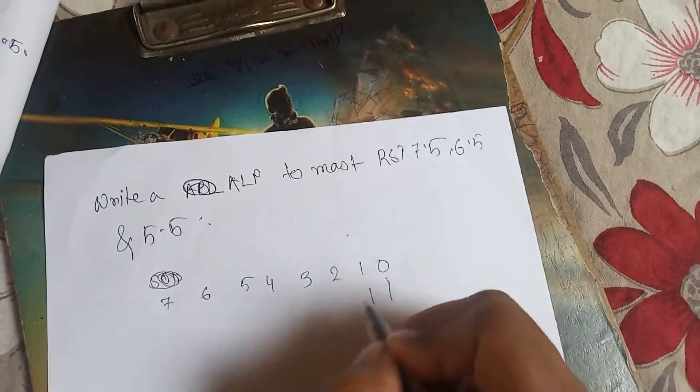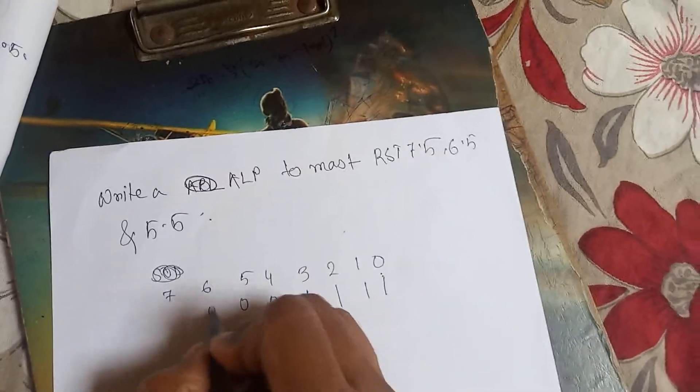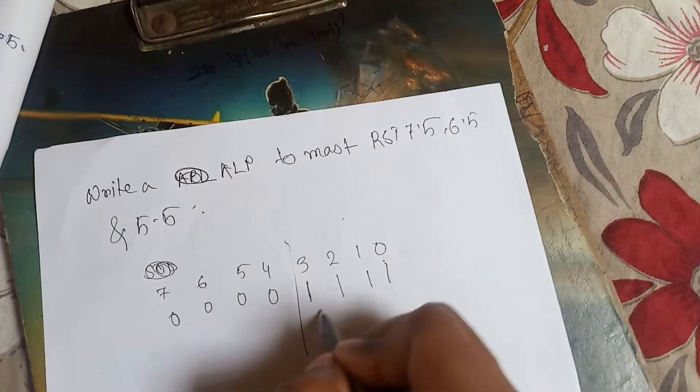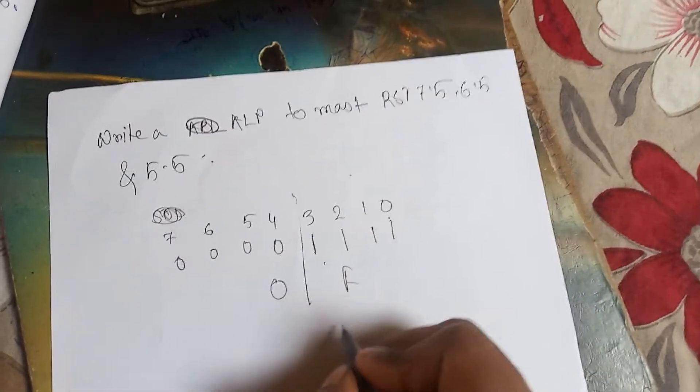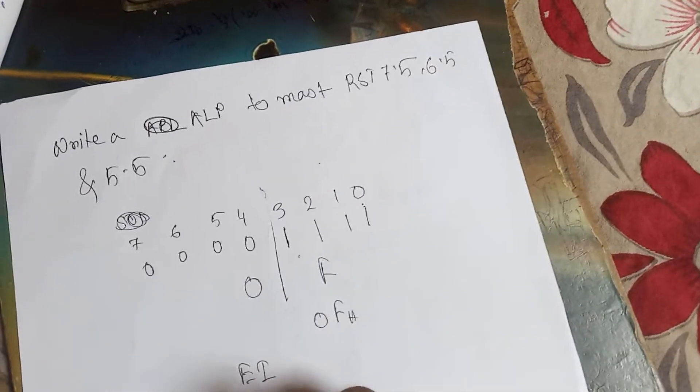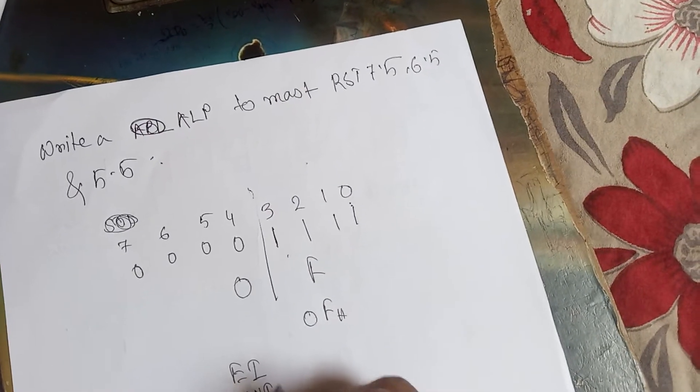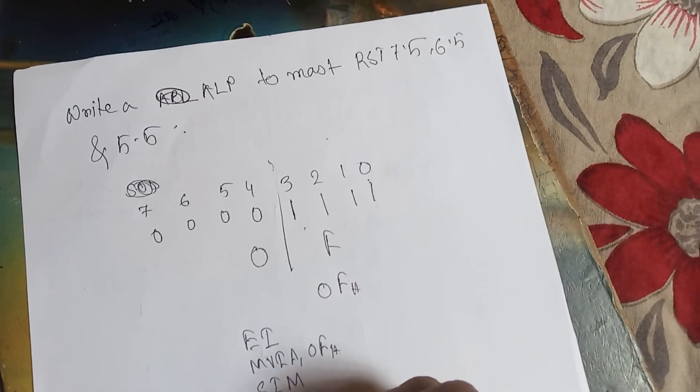This is for 5.5, this is for 6.5, this is for 7.5. Mask 5.5, mask 6.5, mask 7.5. This is the Mask Set Enable, and rest are zero. So this is F and this is 0, so totally 0FH. What is the program? First of all, EI, then MVI A comma 0FH, then SIM.